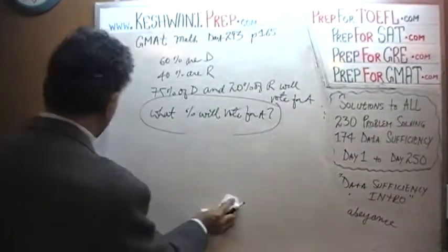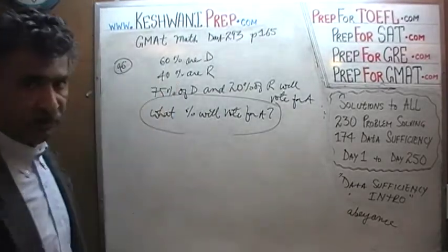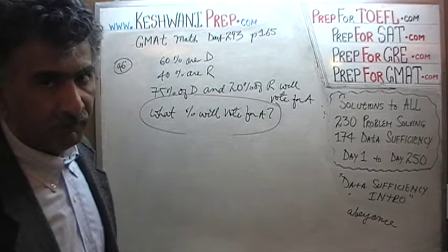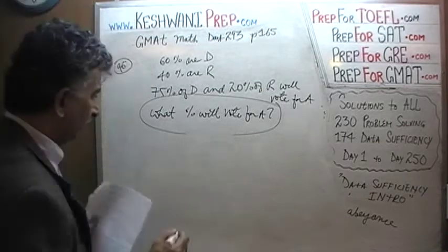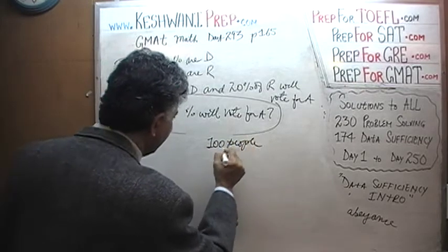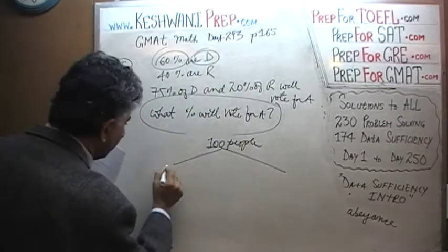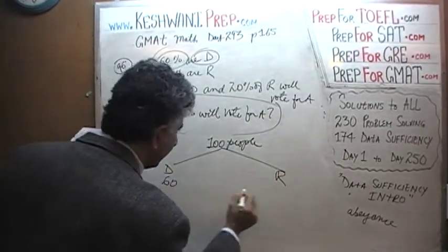This question is actually very straightforward, very simple. Let's make up a number. Since we are dealing with percentages here, a nice number to plug in for the total population of the village would be 100. So let's pretend that we have 100 people. We'll keep it very simple. We have 100 people. We are told that 60% of them are Democrat. So here's our Democrat. Here's our Republican. 60 of them are Democrat. 40 of them are Republican.